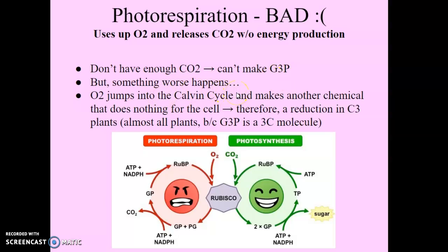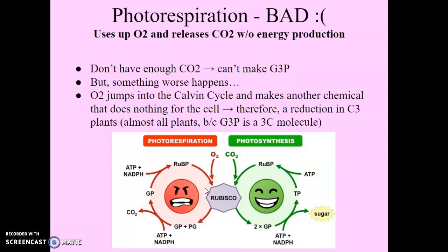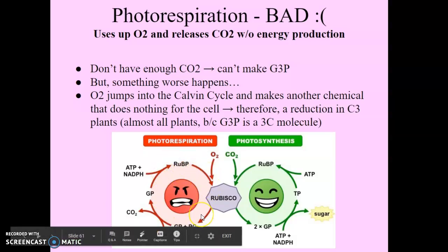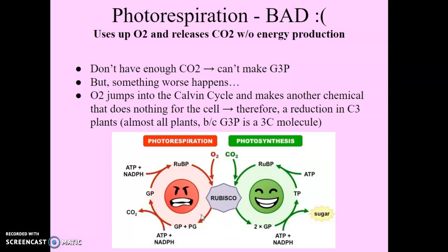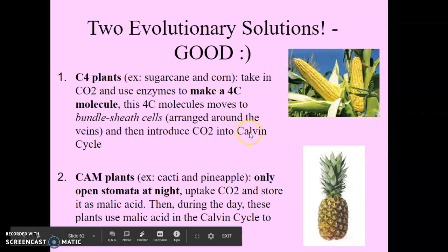Without enough CO2, plants undergo photorespiration, which is harmful — it uses up oxygen and releases CO2 without producing any energy. During photorespiration, oxygen actually enters the Calvin cycle and makes a different chemical that has no benefit for the cell, leading to a reduction in productivity. Plants that normally produce the three-carbon G3P molecule are called C3 plants, and most plants fall into this category.